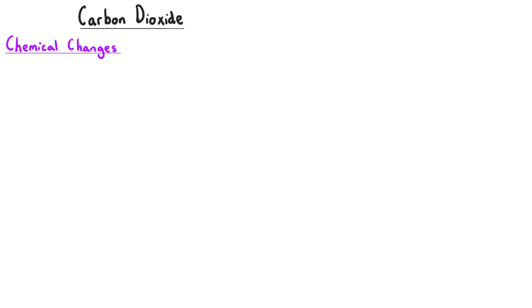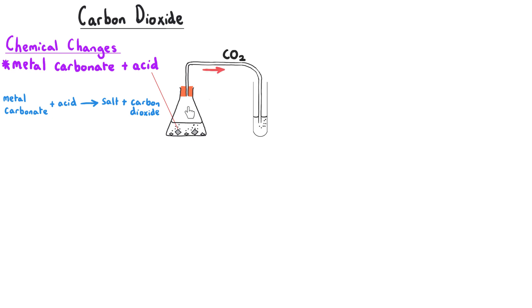Carbon dioxide gas comes up in a number of different topics. First of all, in the chemical changes topic you encounter carbon dioxide because it is produced when metal carbonates react with acid. So you might have copper carbonate in a conical flask, add some acid to it. This will of course produce a salt in the conical flask, but carbon dioxide gas will be produced. It will move through the delivery tube and bubble into the lime water and make it go cloudy.